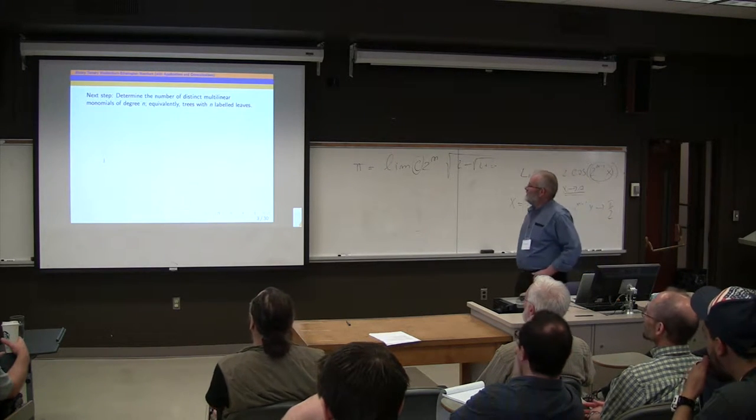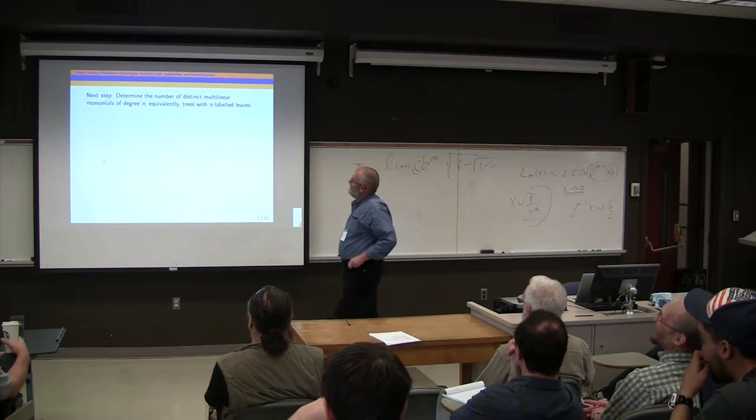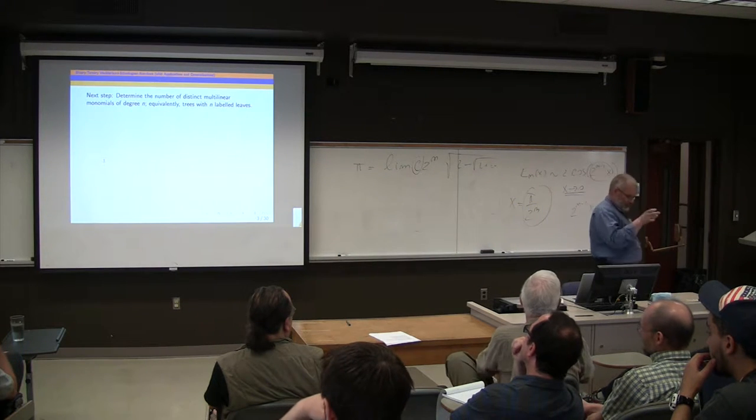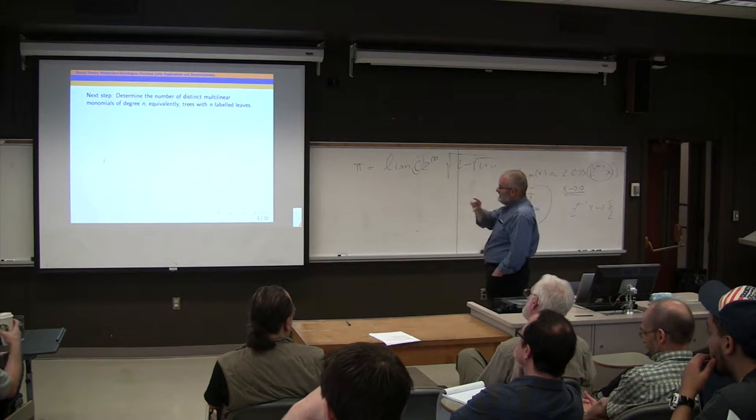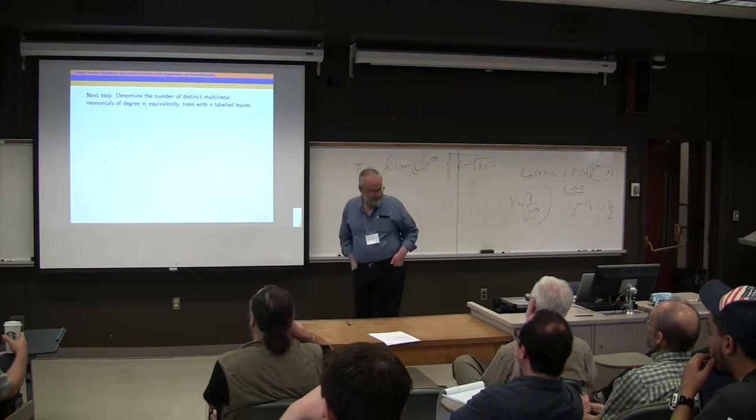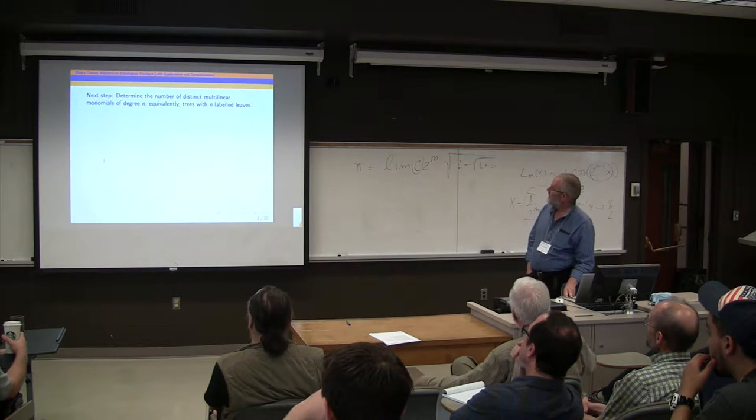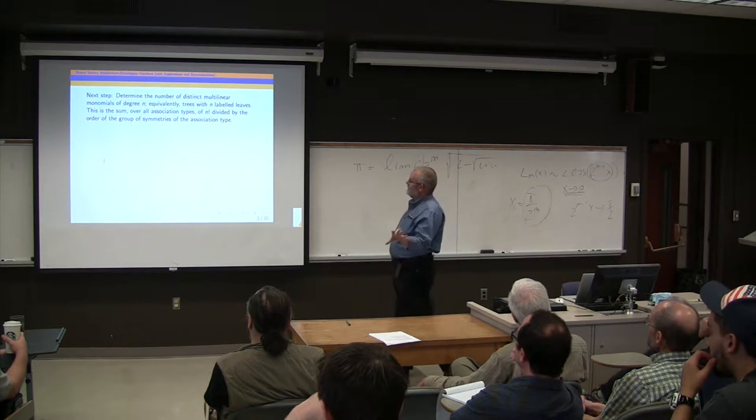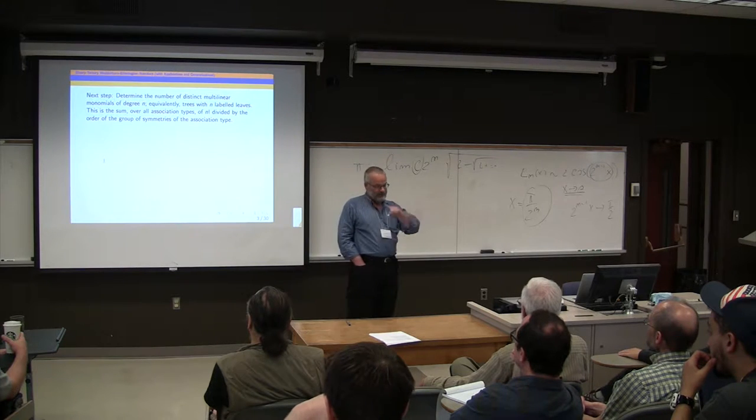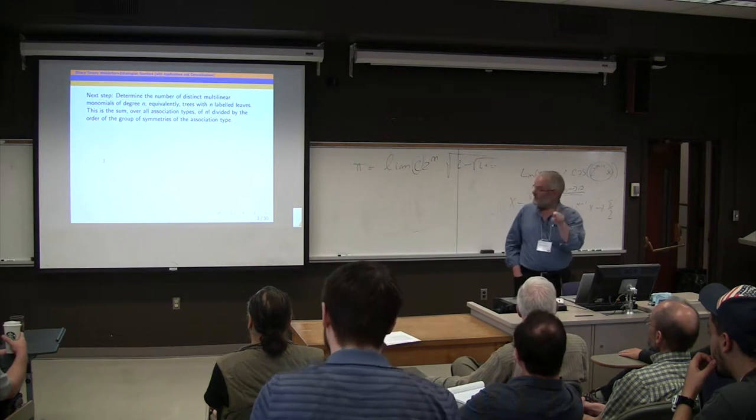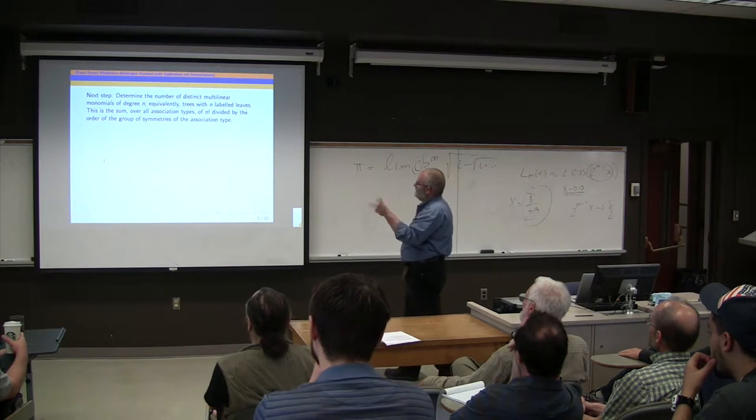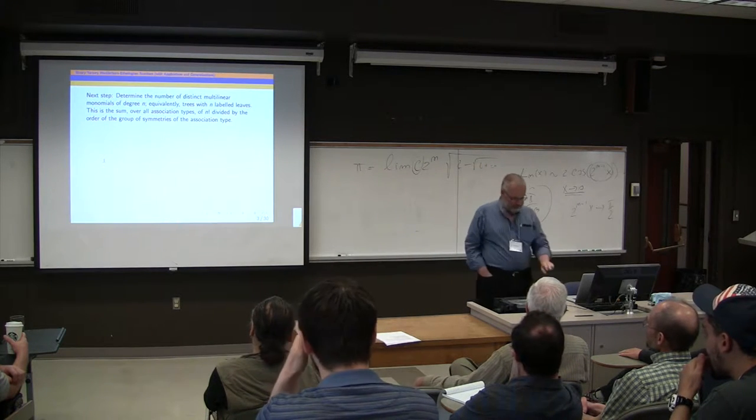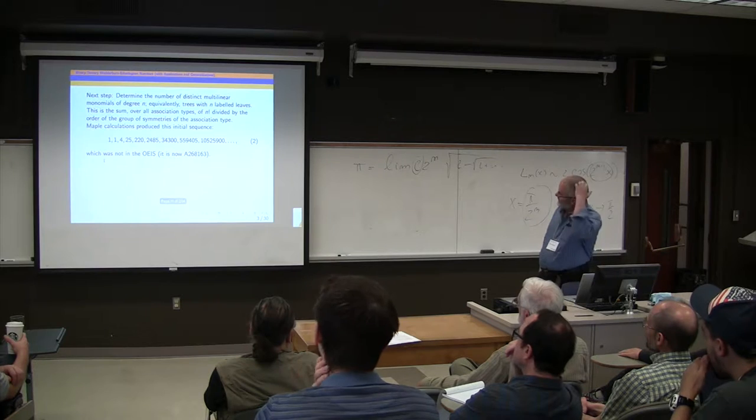So next we're going to determine the number of distinct multilinear monomials in degree n. That means where instead of having dashes representing where the arguments go, I'm putting in a permutation of n symbols. And that's equivalent to trees with n labeled leaves. Another way to think of it is the sum over all of those association types. You take n factorial permutations of the variables to go into the n slots, but because the operations are commutative, each association type has a group of symmetries. So you have to divide by the order of that group of symmetries.